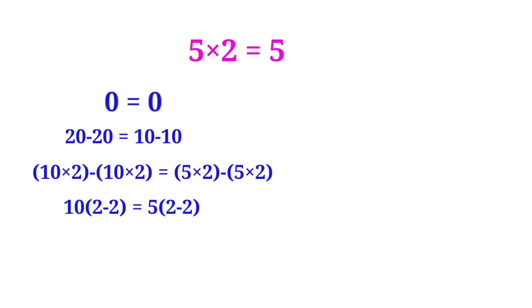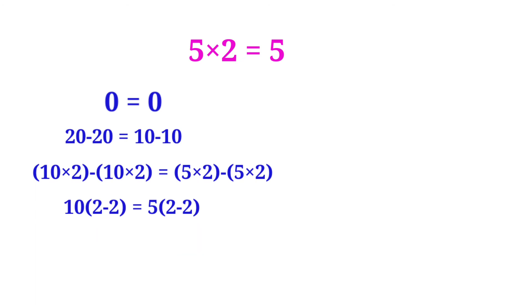Now, 2 minus 2 appears on both sides. So we can cancel the same terms. Then (2 minus 2) and (2 minus 2) are cancelled on both sides.